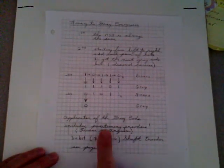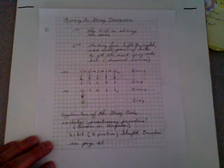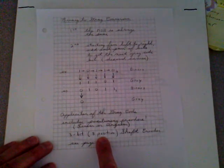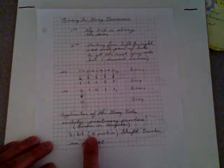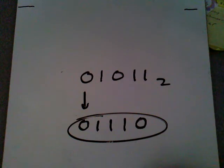The gray code is used a lot in positioning encoders — devices, whether linear or angular, that give a digital representation of the position of some object. The book gives a nice example of a three-bit, eight-position shaft encoder; three bits give you eight possible states (2³=8). Look over page 45. Also look over examples 210, 211, 212, and 214 on pages 46 through 47 for the exam.